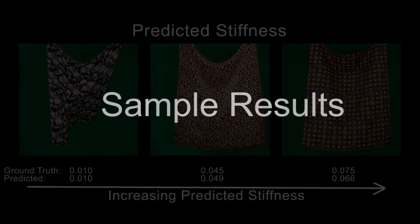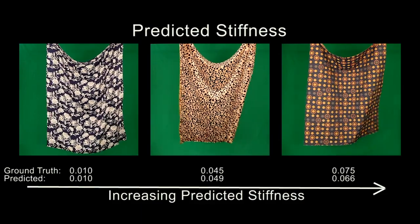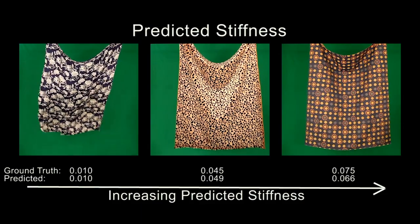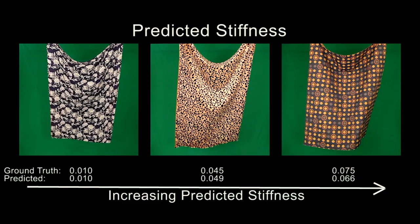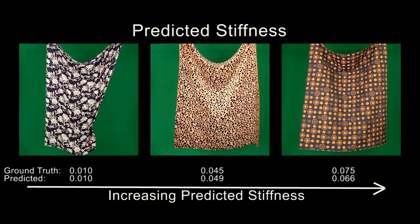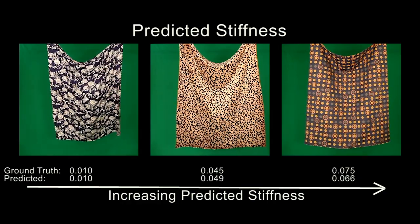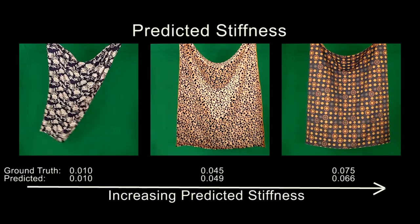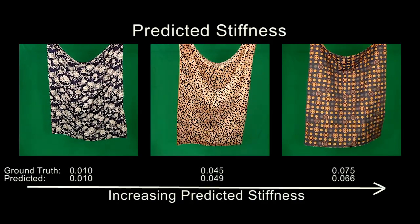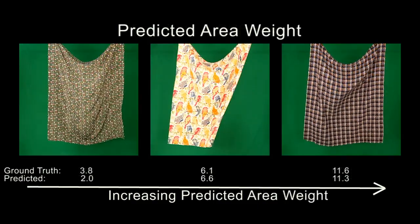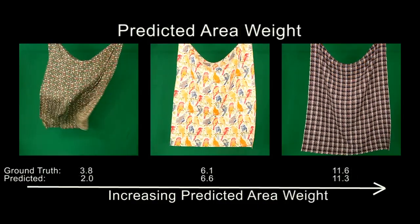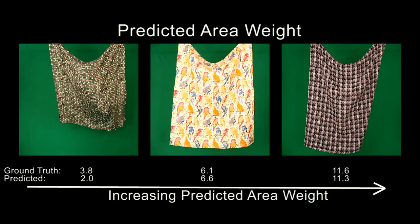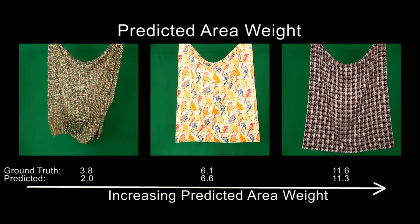Now we will show a sample of typical results from our algorithm. Here we show the stiffness predicted by our algorithm compared to ground truth for three videos. Here we show the area weight predicted by our algorithm compared to ground truth for three videos.